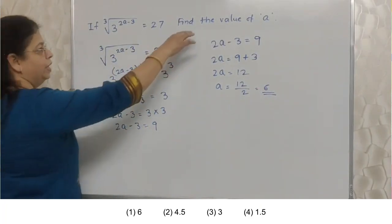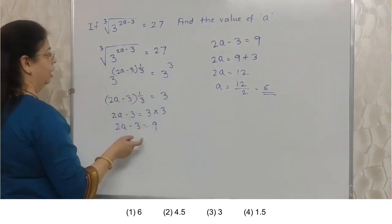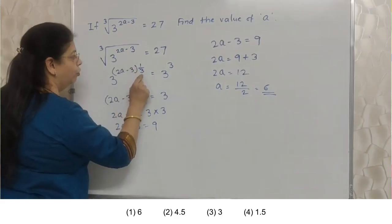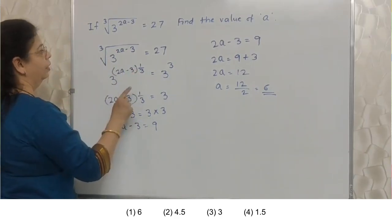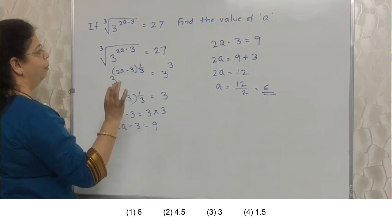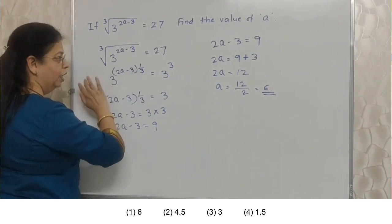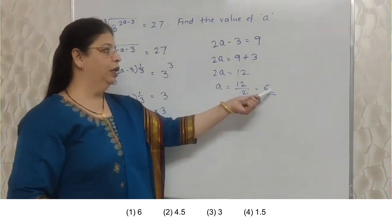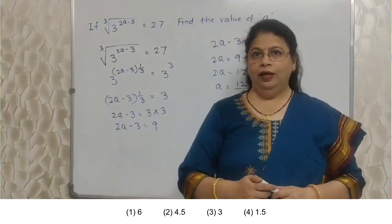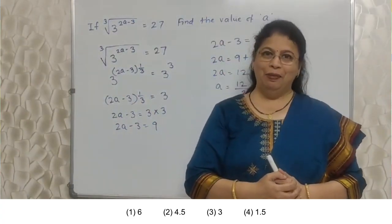See, this part is very easy. Solve equation ko, bas. Lekin yeh jo 1 upon 3 hai, if this concept is not clear, then there are chances of making mistake. Because if you take 3 here instead of 1 upon 3, the entire equation will change. And obviously, the ultimate answer will change. So this concept is very very important. Chalo aage barhte hai.